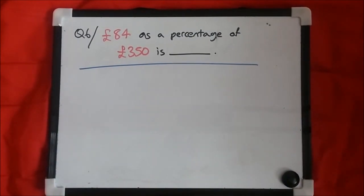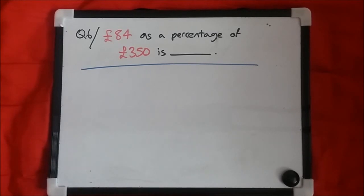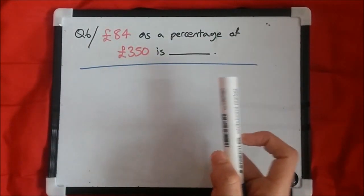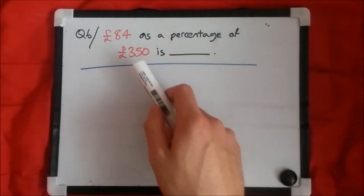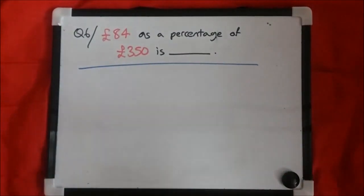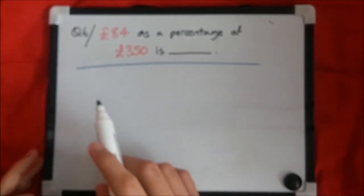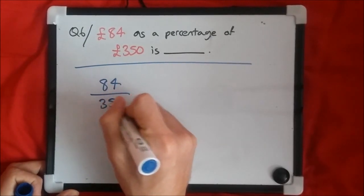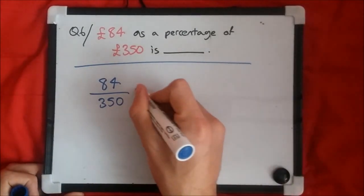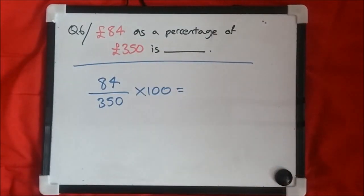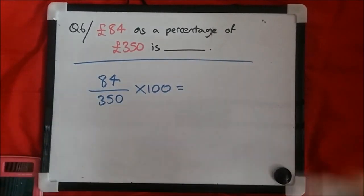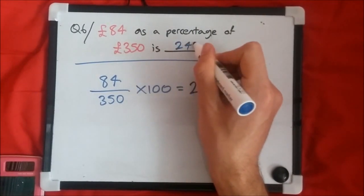Alright, let's do question 6. The question states: 84 pounds as a percentage of 350 — what is it? This is quite straightforward. The total amount is 350 and we want 84 pounds of it. So it's always going to be the amount you're interested in over the total amount. We have 84 out of 350, then multiply by 100 to convert to percentage. So 84 over 350 times 100 gives us 24 percent. Pretty easy.